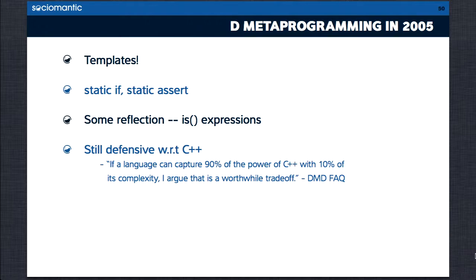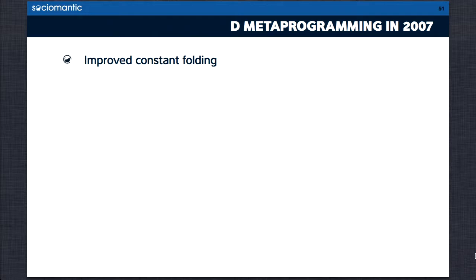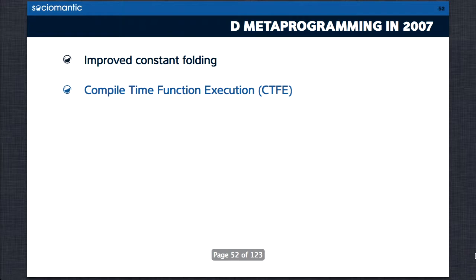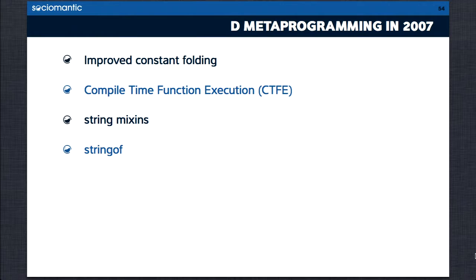That changed in the next two years. By 2007, the compiler had made a lot of guarantees about constant folding, eventually culminating in compile-time function execution — CTFE. In theory, almost any function could be run at compile time. String mix-ins arrived at the same time — I think they're best viewed as the inline assembler of generative programming, allowing you to do anything, which is both a strength and a weakness. And we got things like stringof, a big help for allowing libraries to produce nice error messages.